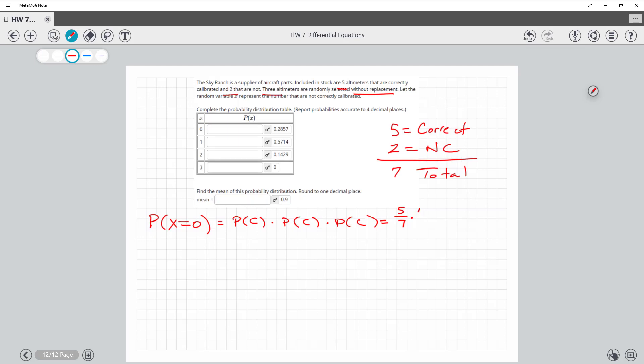So that means now there's four correct, but only six left, and then three correct out of five. So I pick up my handy calculator, and I take five-sevenths times four-sixths times three-fifths, and I get that answer right there, 0.2857.